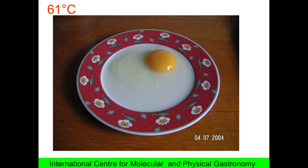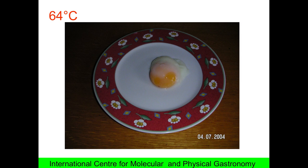So you see, here is an egg at 61, probably one night, and nothing coagulated because you are below the denaturation temperature of any protein of the egg. Now, when you move to 64, you see, there is the beginning of coagulation for the egg white, not for the yolk.